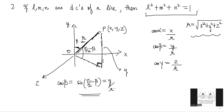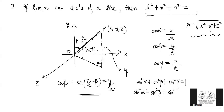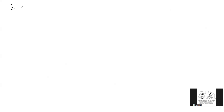Once we understand that cos²alpha + cos²beta + cos²gamma = 1, we can also easily prove that sin²alpha + sin²beta + sin²gamma = 2. All you have to do is use 1 − sin²alpha = cos²alpha and expand. Now we can move to the idea of direction ratios.